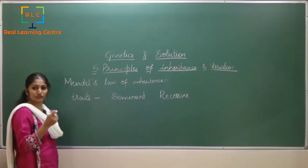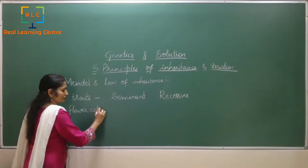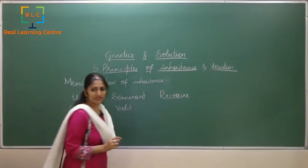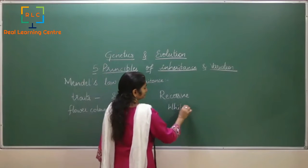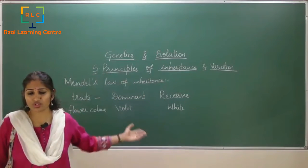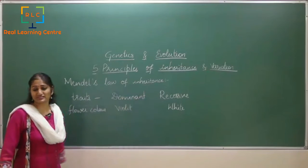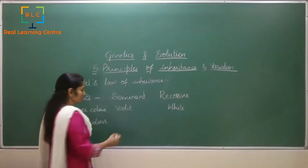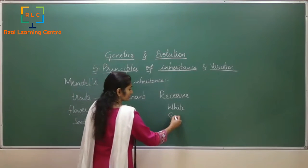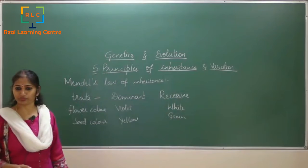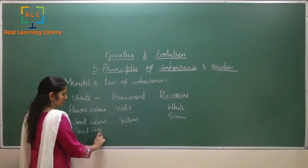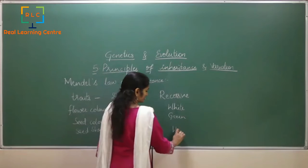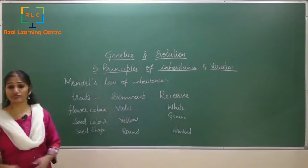The first trait Mendel observed was flower color — seen in two colors: violet and white. Violet was dominant and white was recessive. Then there was seed color — most seeds were yellow but very few were green. And then seed shape — the seed shape was round, while very few were wrinkled.